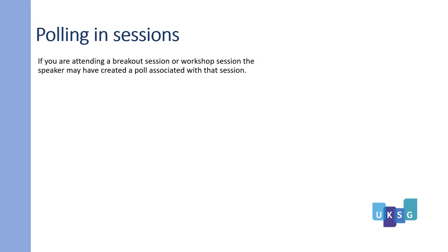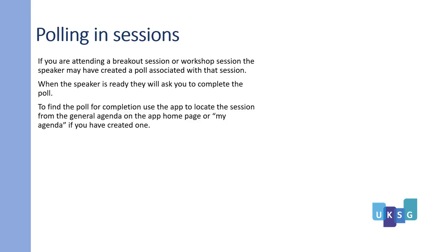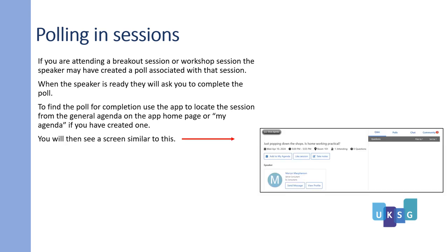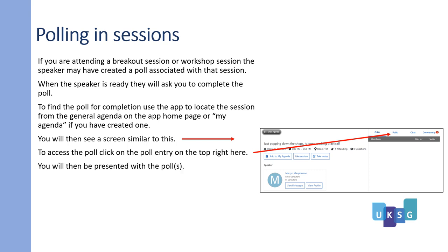Polling in sessions. If you are attending a breakout or workshop session, the speaker may have created a poll associated with that session. When the speaker is ready, they will ask you to complete the poll. To find the poll, use the app to locate the session from the general agenda on the app homepage, or My Agenda if you have created one. You will see a screen similar to this — to access the poll, click on the poll entry on the top right. You will then be presented with the polls. There are four types of polls explained on the next slides.